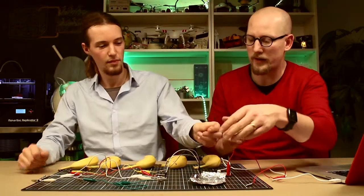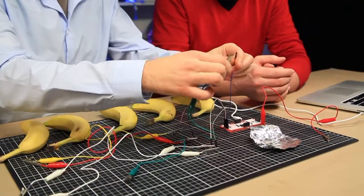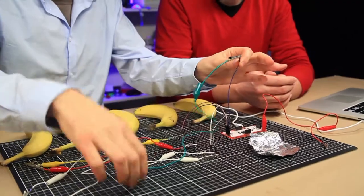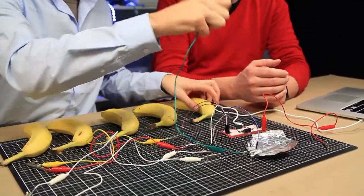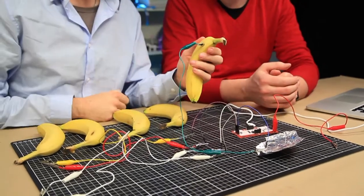And then we connect those into the crocodile clamps. Like this. And we connect those into the bananas. And the best thing in order to get a good conductivity is to just shove them in there basically, all the way.